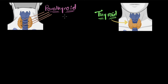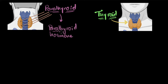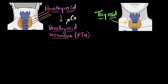So the parathyroid gland, like any gland, secretes a particular hormone, and it's called — it's called the parathyroid hormone. I love this name. This is how everything should be named in biology. So parathyroid hormone — what's its job? Well, its main job is specifically to increase the calcium ion levels in blood.